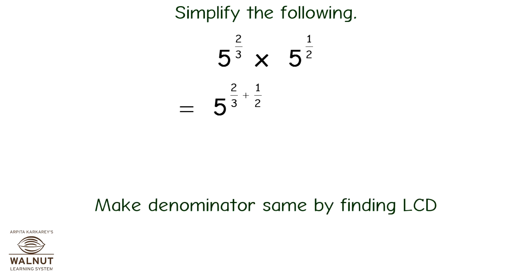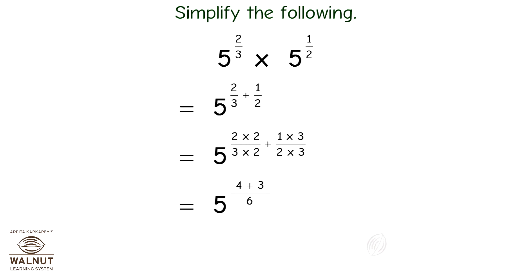Now make denominators the same by finding the LCD. Therefore the expression equals 5 raised to 2 into 2 upon 3 into 2 plus 1 into 3 upon 2 into 3, which is equal to 5 raised to 4 plus 3 upon 6, which is equal to 5 raised to 7 upon 6.